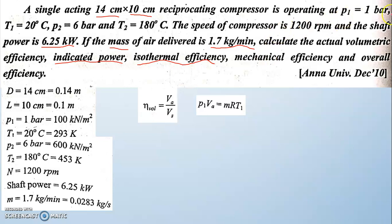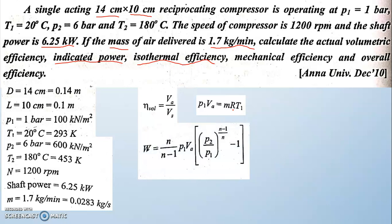VA is not directly given, but P1 and T1 are given. Using the ideal gas equation P1·VA = m·R·T1, we can calculate VA. Note that VA is the actual volume, not V1 (the total intake volume = swept volume + clearance volume). Substituting known values of P1, m, R, and T1 gives us VA, which we then substitute into the volumetric efficiency equation.